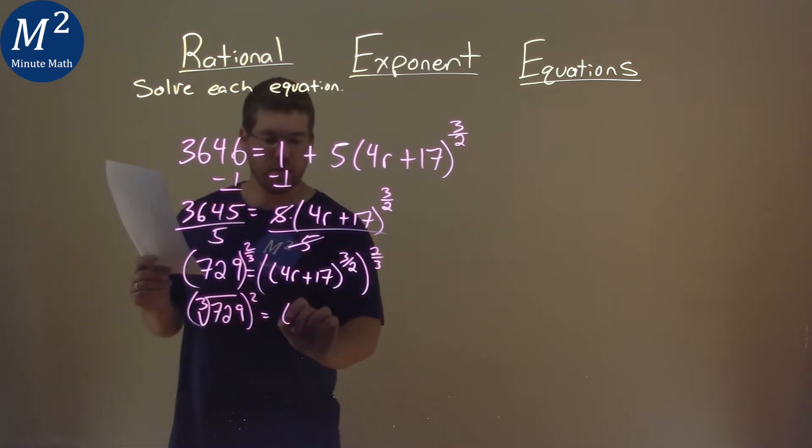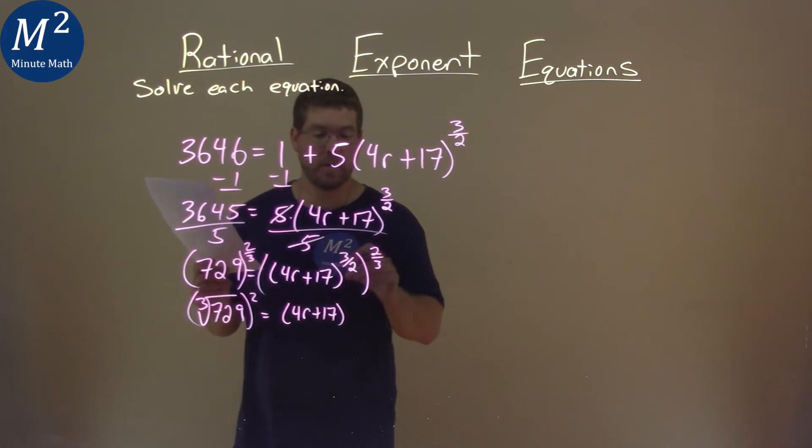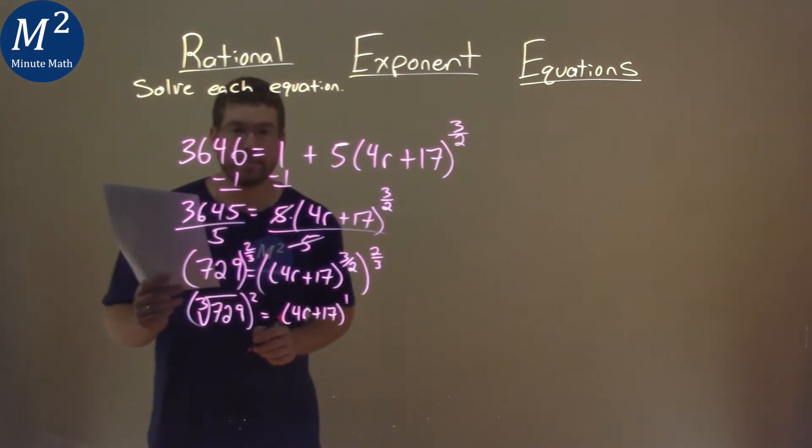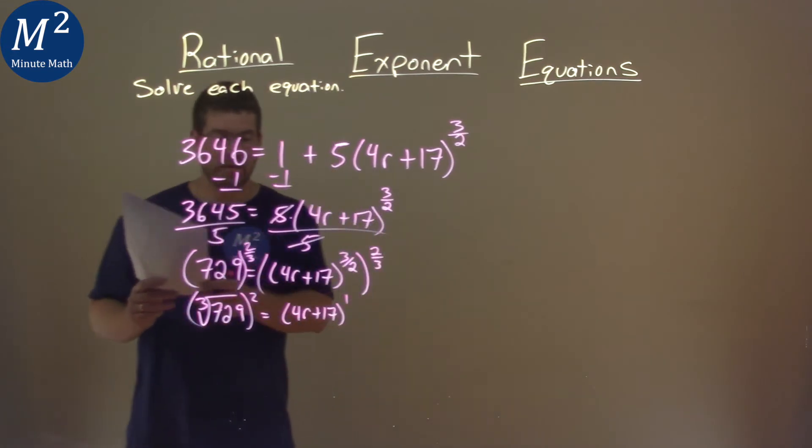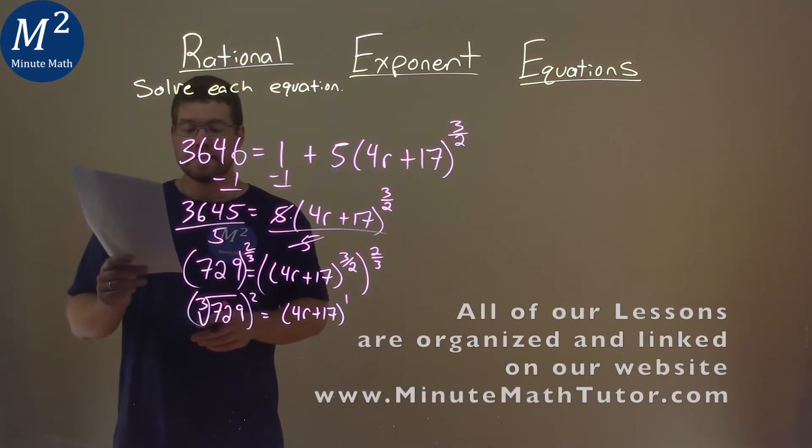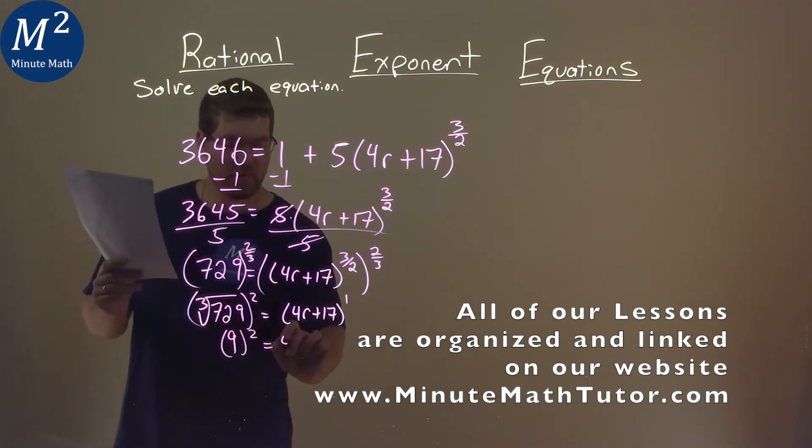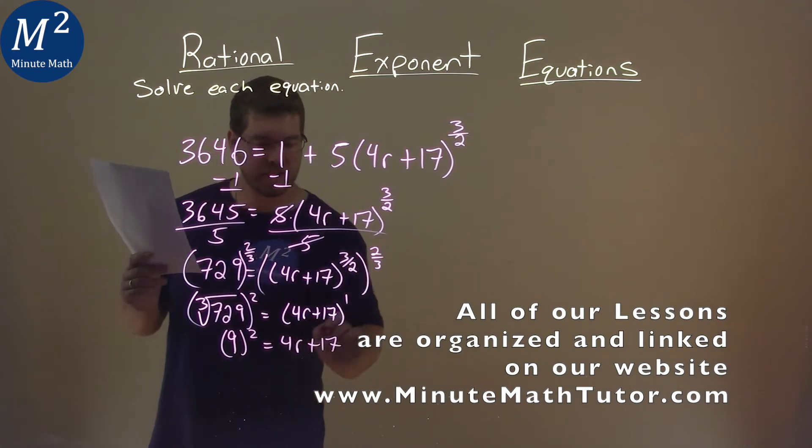The right side, we have 4r plus 17. But when we raise these to another fractional power, we just multiply the exponents. 3 halves times 2 thirds, on purpose, was there to equal 1. Now it's getting easier. What's the third root of 729? Well, third root of 729 is just 9. We're squaring that. And we have 4r plus 17 right here.